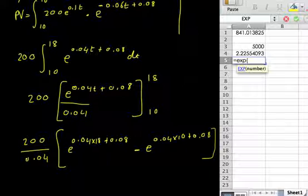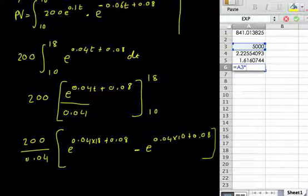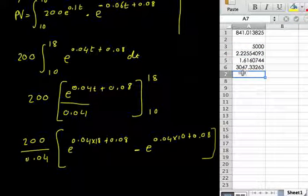equals the exponential of 0.04 times 10 plus 0.08, is that. So we're doing equals this 5,000 here, it's that bit multiplied by open brackets, this bit, e to all of that, minus e to all of that, so that's there, close brackets, and then we have it, £3,047.33.